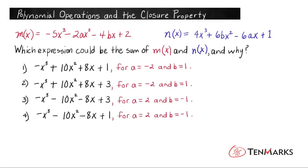In this lesson, we're going to look at polynomial operations and the closure property. The closure property tells us that if we add two real numbers, we're going to get a real number for our sum. Or if we multiply two real numbers, we're going to get a real number for our product.